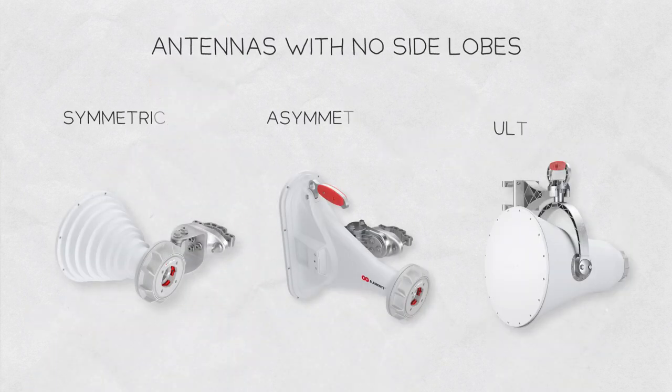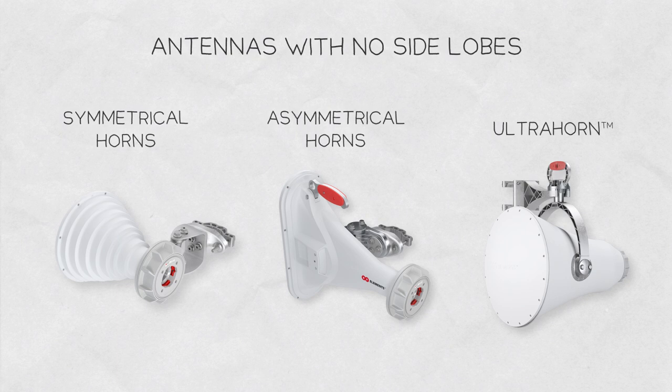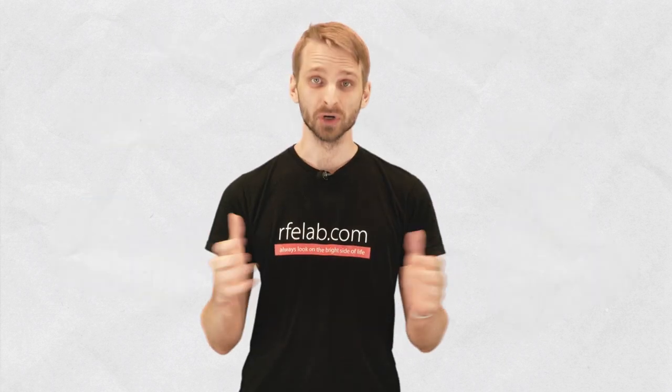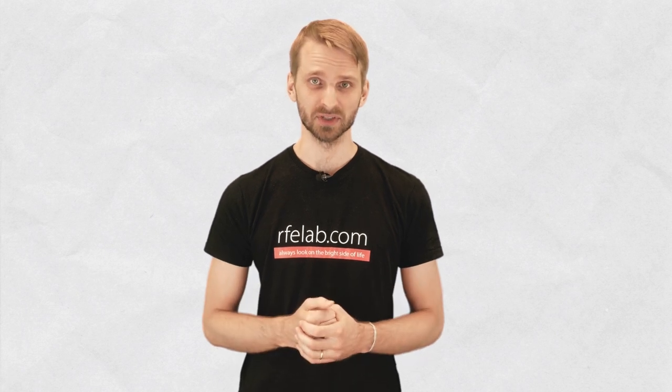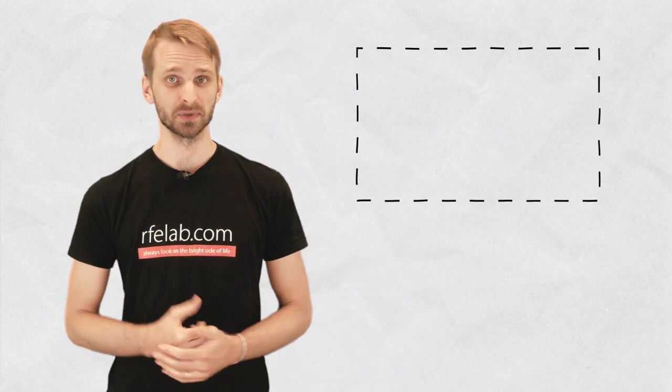A good example of antennas with no side lobes are RF Elements horn sectors optimized for 5 GHz WISP networks in high interference and high customer density areas. If you enjoyed our video, leave us a comment, like, and consider subscribing to our channel or check out some of our previous episodes.